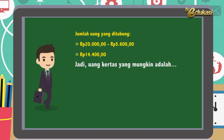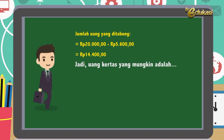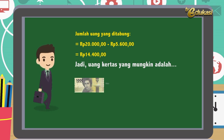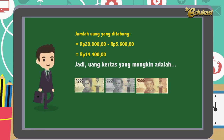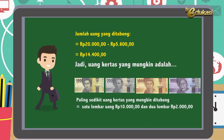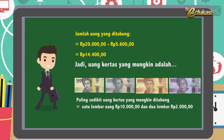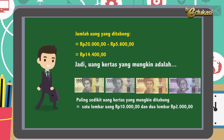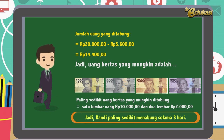Jadi, uang kertas yang mungkin adalah: Rp1.000, Rp2.000, Rp5.000, dan Rp10.000. Paling sedikit, uang kertas yang mungkin adalah selembar uang Rp10.000, dan dua lembar uang Rp2.000. Kesimpulan: Randi paling sedikit menabung selama tiga hari.